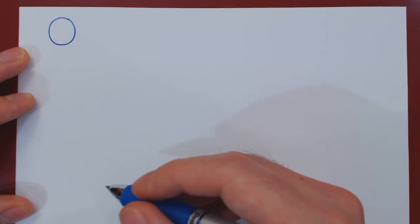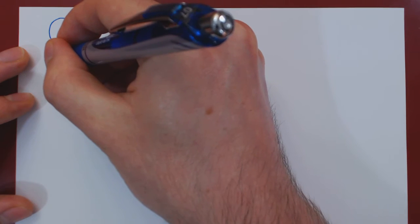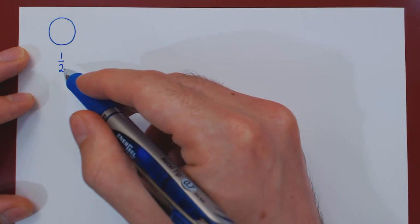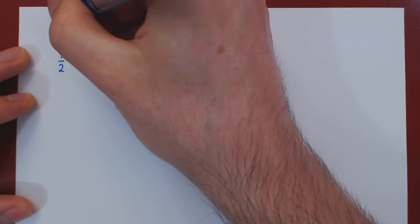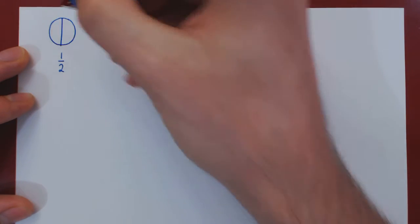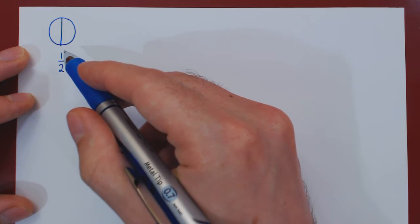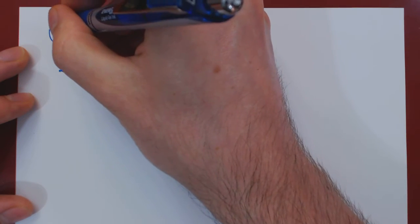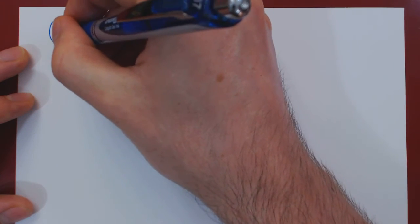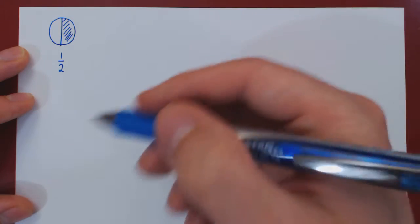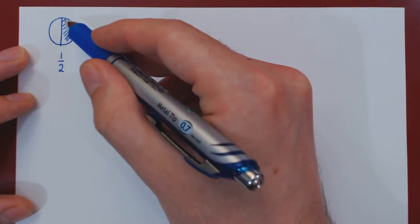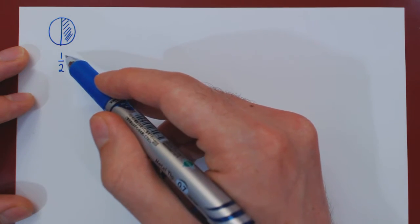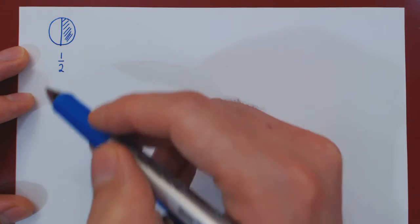If you consider one half and ask what that means, well, dividing by two means divide the whole into two parts of equal size. The numerator, one, says take one part out of the two parts. With respect to the whole circle, the shaded region consists of one half. We took one part out of the total of two parts.